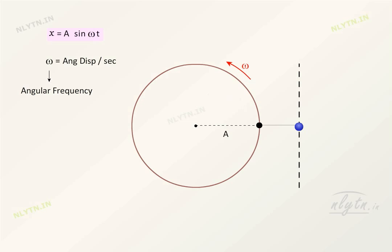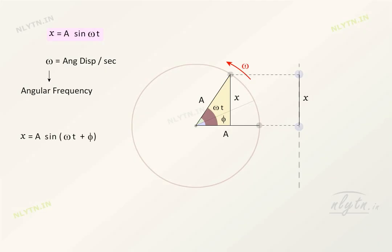If instead of starting from this position, the particle starts from such a position, then the position of the particle after time t will be equal to A sin of this angle, omega t plus phi. This angle represents the phase constant of a simple harmonic motion.